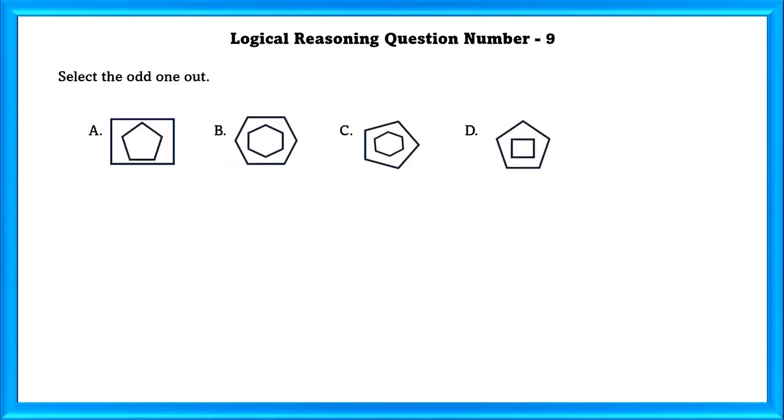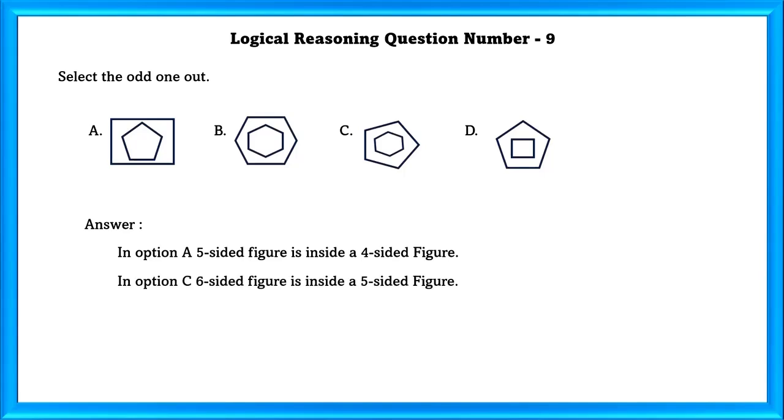Logical Reasoning Question Number 9: Select the odd one out. In option A, a 5-sided figure is inside a 4-sided figure. In option C, a 6-sided figure is inside a 5-sided figure. And in option D, a 4-sided figure is inside a 5-sided figure. But in option B, a 6-sided figure is inside a 6-sided figure. Only in option B, the same-sided figure is inside a same-sided figure. So our option is B.